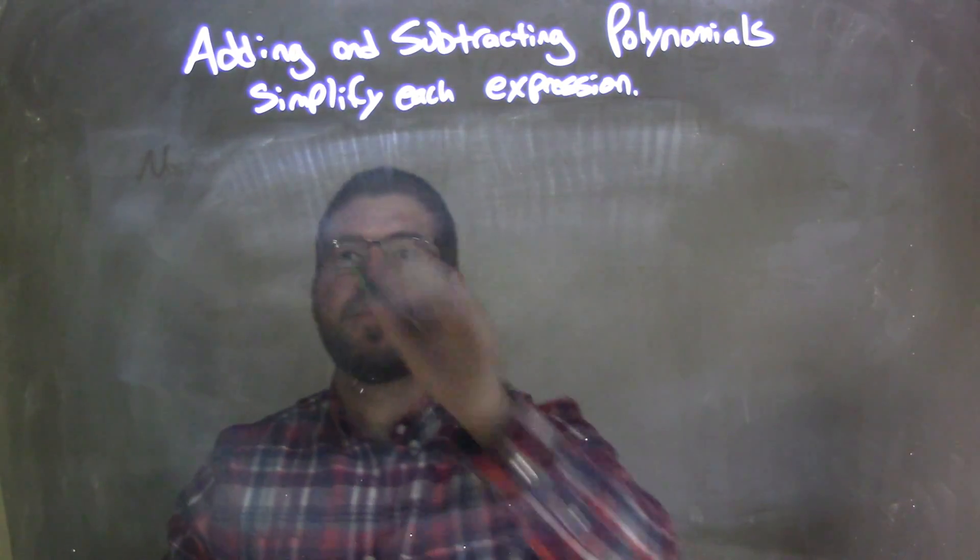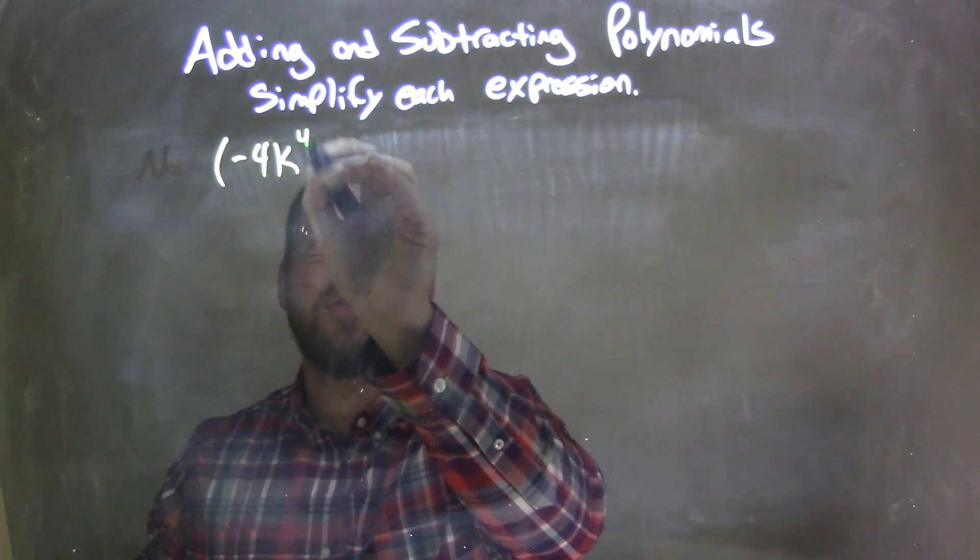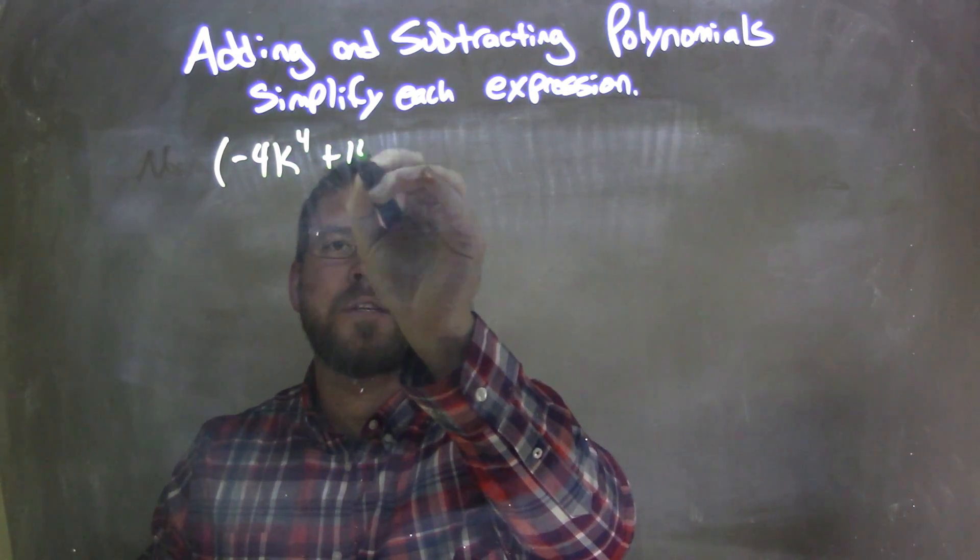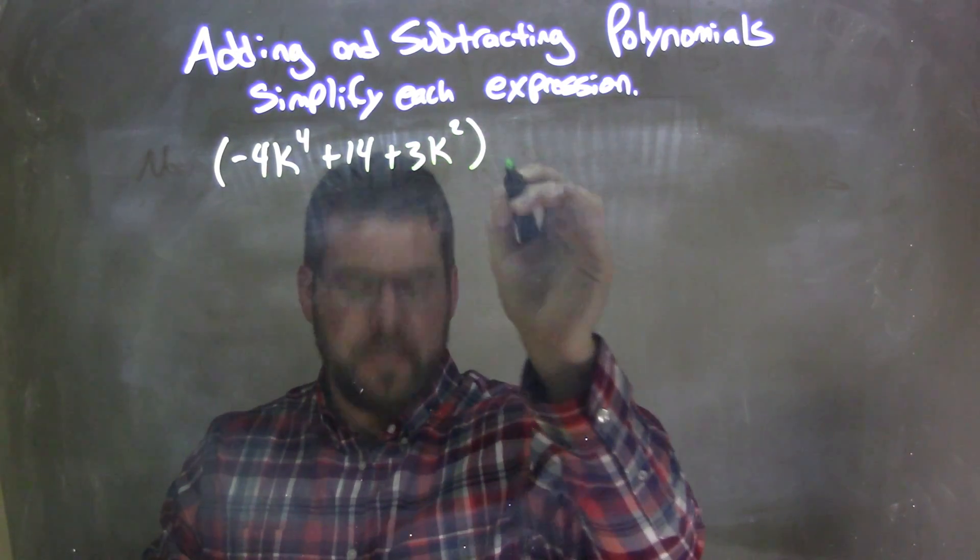So if I was given this polynomial: negative 4k to the 4th, plus 14, plus 3k squared, in parentheses,